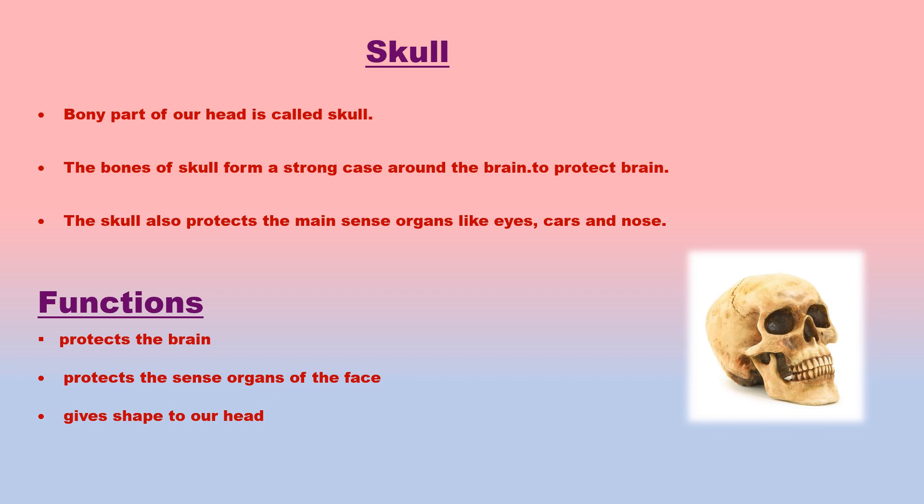The bony part of our head is called skull. The skull is made of 22 bony plates joined together. Our brain is inside the skull in its upper part. The brain is made of soft tissue which could be easily damaged without a hard covering. The bones of skull form a strong case around the brain, protecting it. The lower part of skull contains the face bones, including nose bone, and the skull also protects main sense organs like eyes, ears and nose.